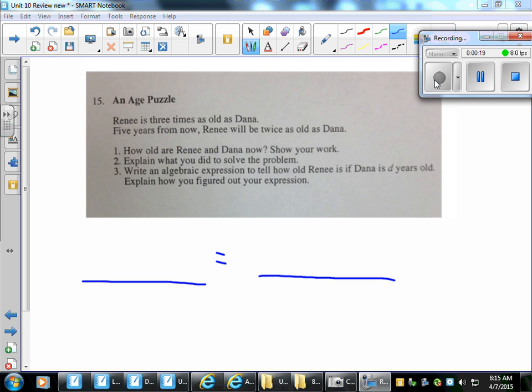Five years from now, Renee will be twice as old as Dana. So Renee is three times as old as Dana. Dana is D years old, so that means D times three will equal five years from now, twice as old, two times D, and we've got plus five.